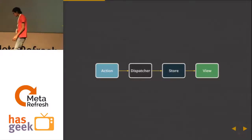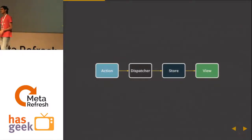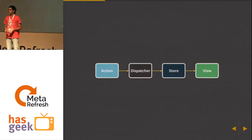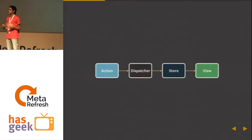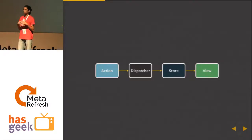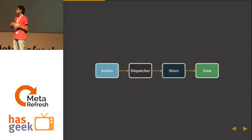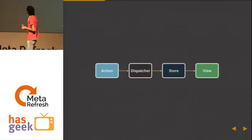So what's Flux about? Flux throws away the concepts of MVC for a unidirectional data flow. In MVC apps, we're used to models managing your data. Most of the time, a single model represents a row in your database — very close to the idea of ORMs.